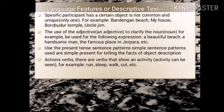Language Features of Descriptive Text. Specific participant: has a certain object that is not common and is unique, only one. For example: Pandangan Beach, My House, Borobudur Temple, Uncle Jim. The use of adjectives to clarify the noun — for example: a beautiful beach, a handsome man, the foremost place in Jakarta, etc.